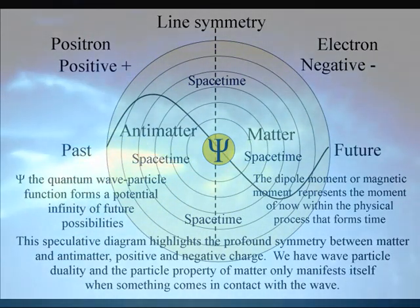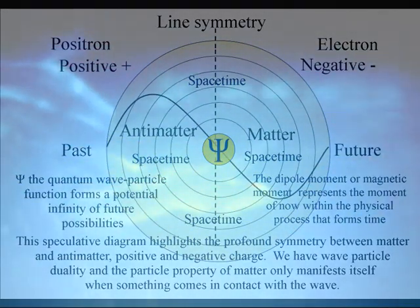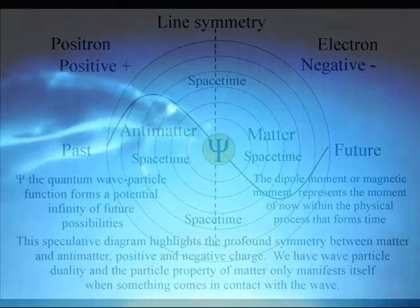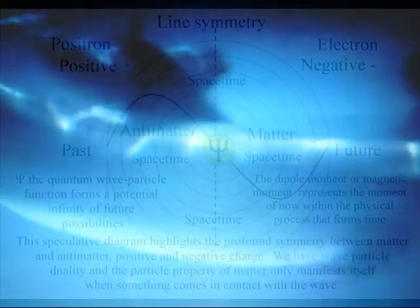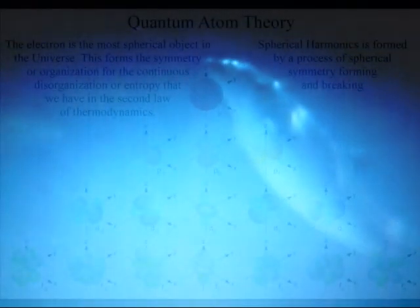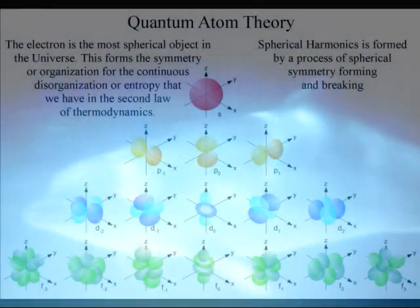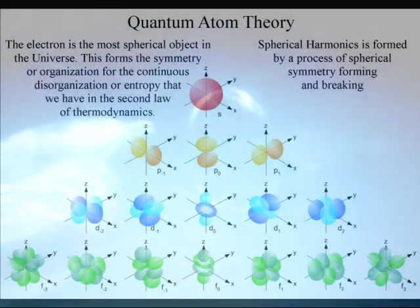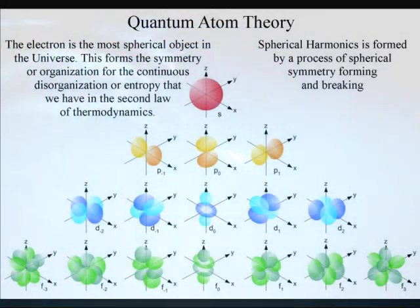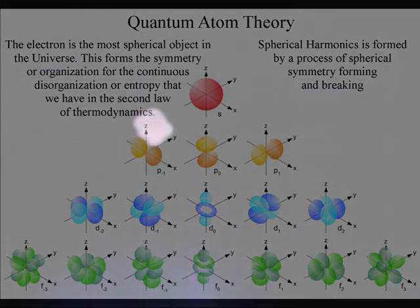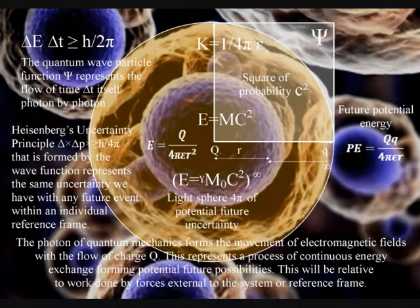In this theory, matter-antimatter annihilation forms part of a process of continuous creation, with the future coming into existence photon by photon within an infinite number of dynamic reference frames. The idea of atoms of different elements bonding together by sharing electrons and then interacting with the wave-particle duality of light — creating their own future — gives us an intuitive picture of modern chemistry. We have one universal process of spherical symmetry forming and breaking at the sub-microscopic world of quantum mechanics, out of which the structure of modern chemistry is formed, and upon which the microscopic world of living organisms is then based.